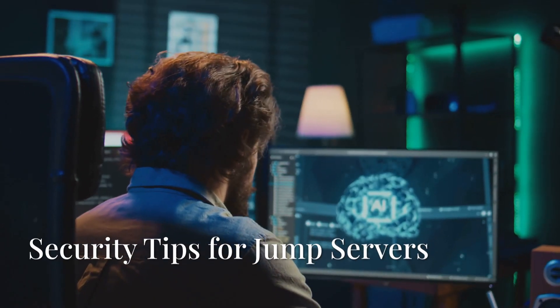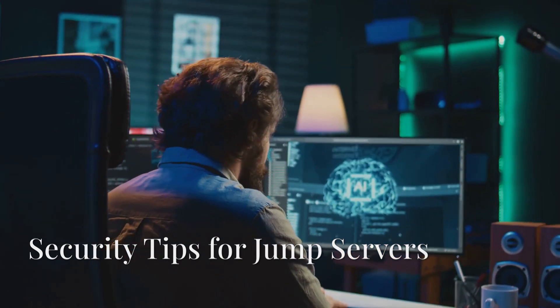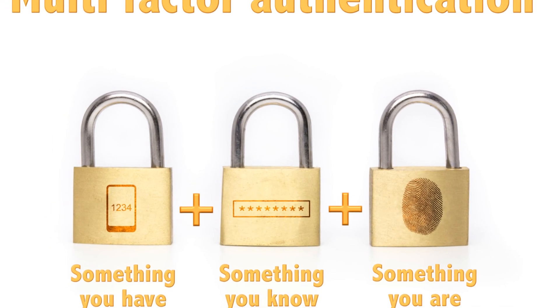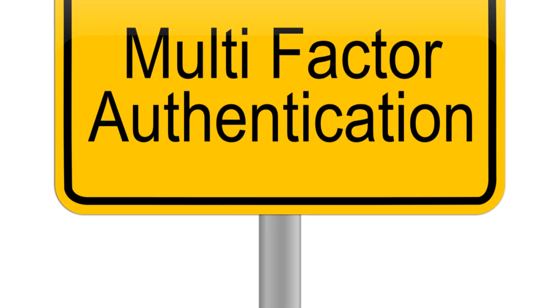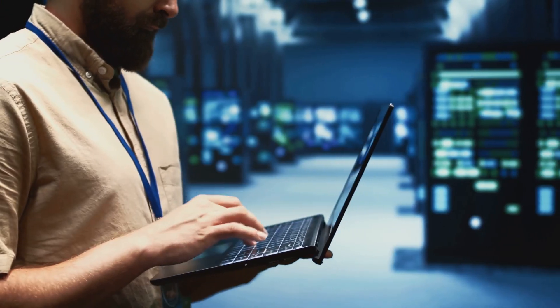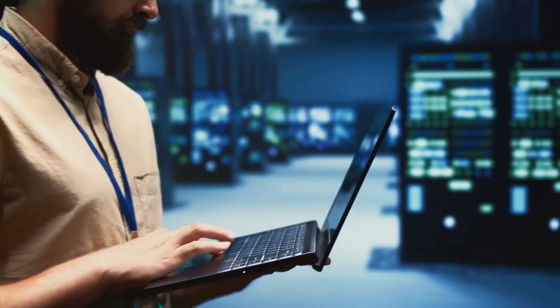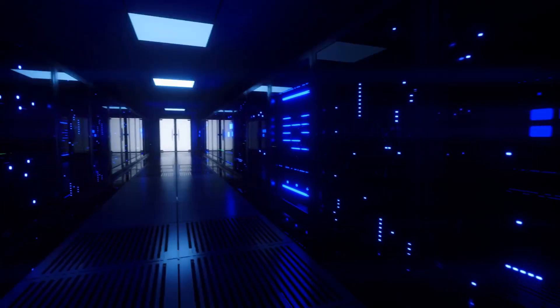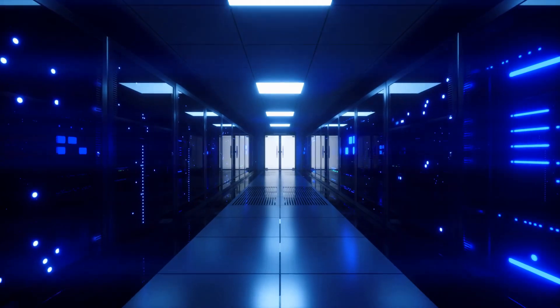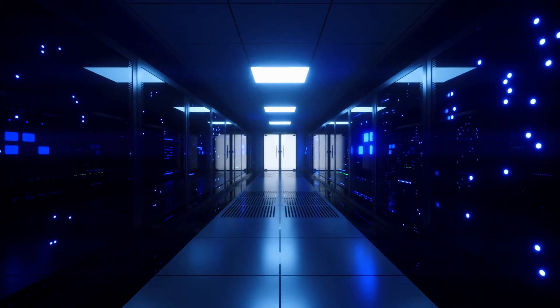Best practices for jump servers: harden the operating system and disable unused services. Install patches. Use multi-factor authentication — passwords are okay, but MFA is better. Log everything; it's your black box in case something goes wrong. Restrict outbound access — the jump server shouldn't be used to surf cat videos. Limit access hours; nobody should be accessing your internal network at 2 a.m. unless it's Batman.